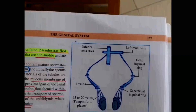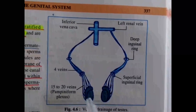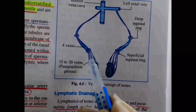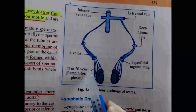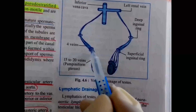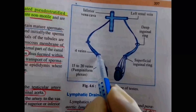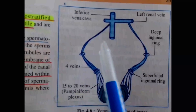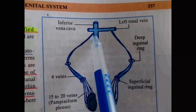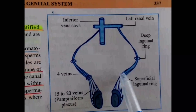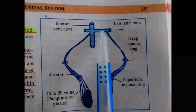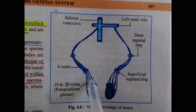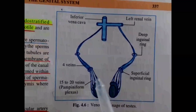The venous drainage of the testis is through the testicular veins. The testicular veins form the pampiniform venous plexus. In the case of the right testis, it drains directly into the inferior vena cava, but the left testis first drains into the left renal vein, which then drains into the inferior vena cava.